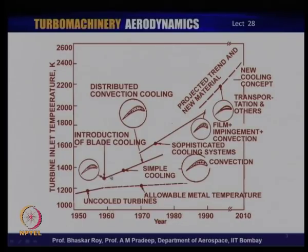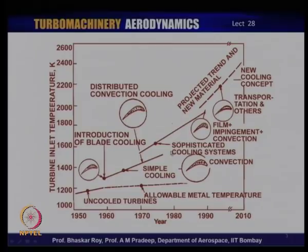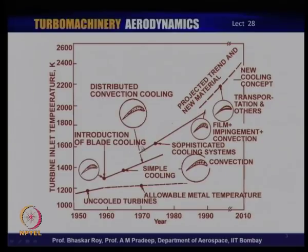It is basically an engineering method coupled with the science of heat transfer, and as a result the temperature could go up to near about 1400 degrees. Then people realized you need more complex cooling technology to go higher. More complicated cooling technology came in, involving film cooling, then impingement cooling, and so on, which has taken the turbine entry temperature to near about 2000 degrees. Very modern gas turbines do have turbine entry temperature very close to 1900 or 2000 K.